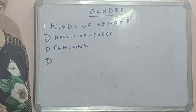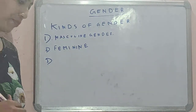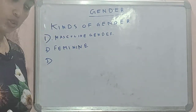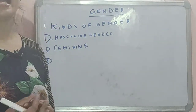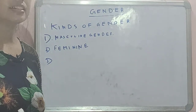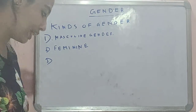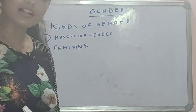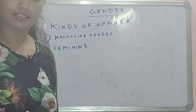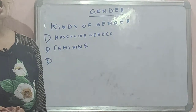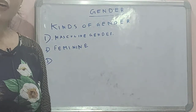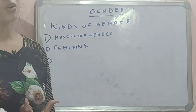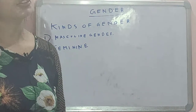Now we are going to talk about common gender. A noun which denotes both male and female is known as common gender. For example, we say 'parents' — it can represent either mother or father, but as a whole we say parents, so 'parents' is a common gender.